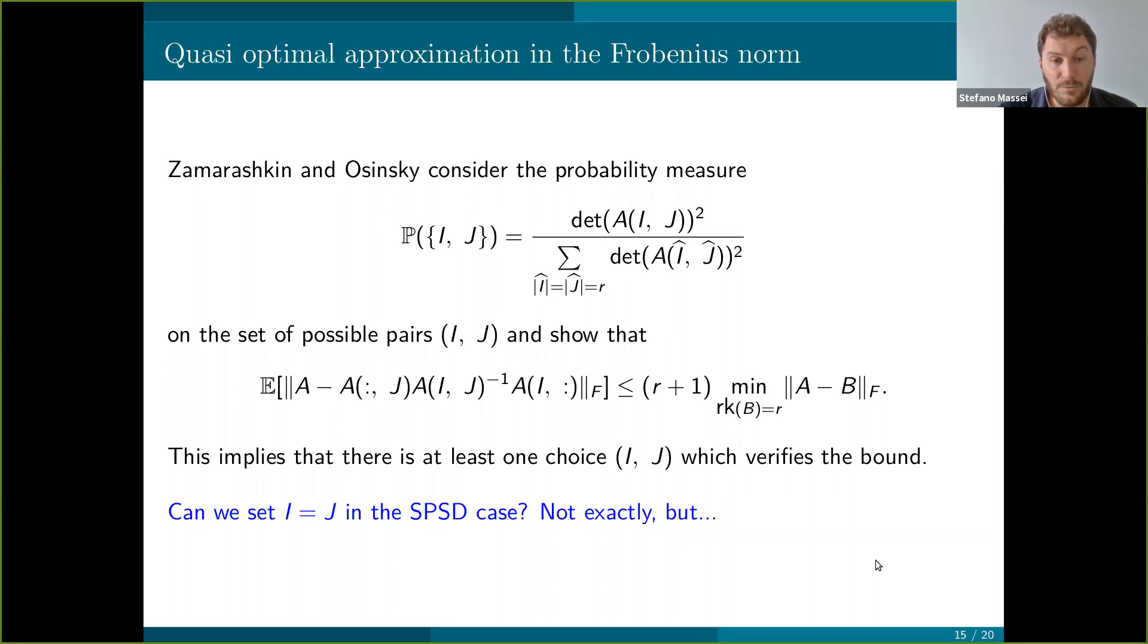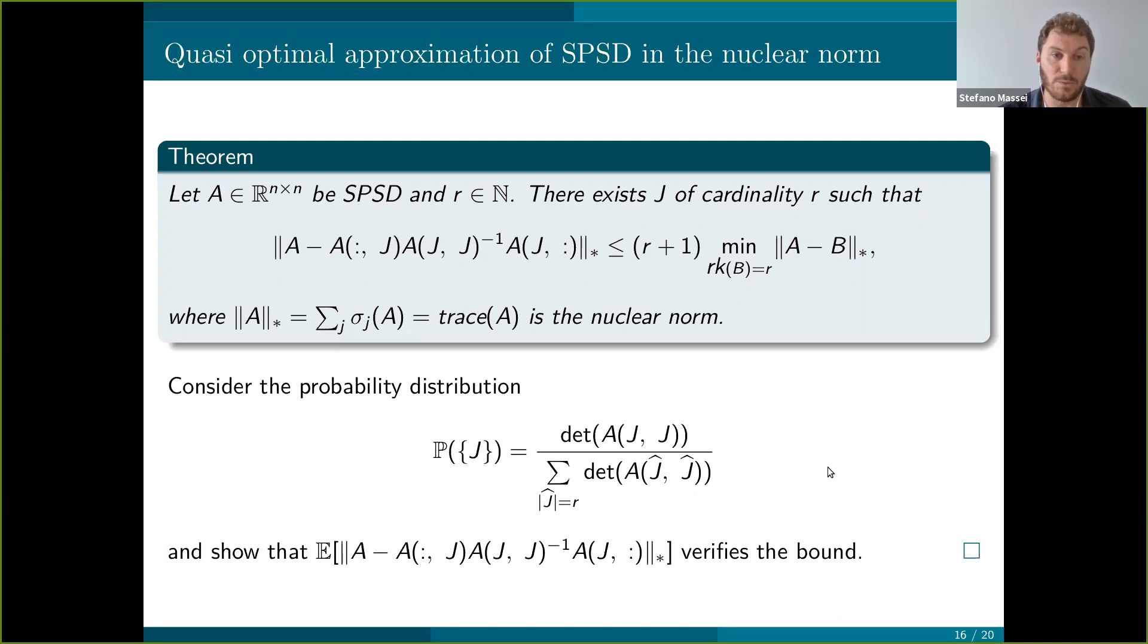If we go back to our framework, the SPSD case, it is tempting to try to prove something analogous just by replacing i with j, assuming a symmetric choice of indices. But unfortunately, such a bound has been proven to not hold. But we can show something similar, it's just a matter of changing the norm. We can actually show that if we stay on principal submatrices in the SPSD case, we can find something that is quasi-optimal, but with respect to the nuclear norm, which is defined as the sum of the singular values. And that in the particular case of SPSD matrices also corresponds to the trace of the matrices here. The proof is a slight modification of Zamanashkin and Osinski's results where we just change the probability distribution here. With the same argument, we show that the expected value of the cross approximation error verifies the bound.